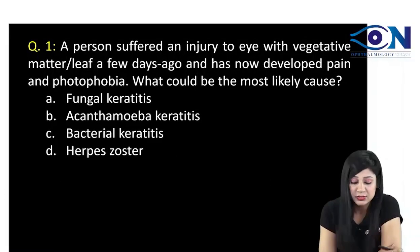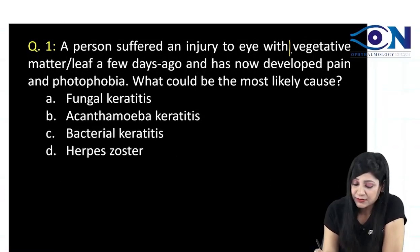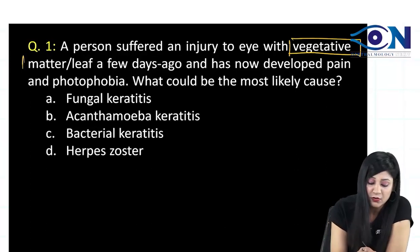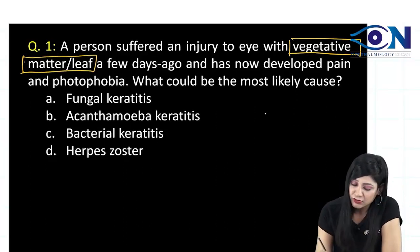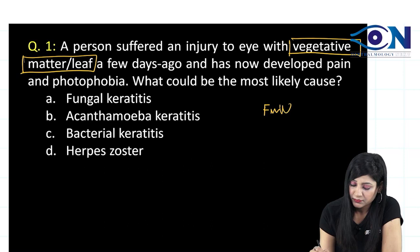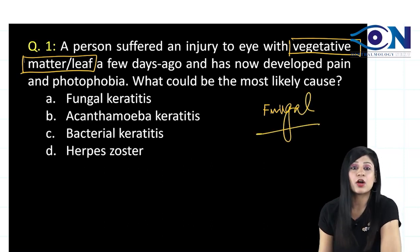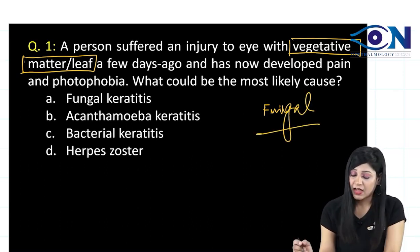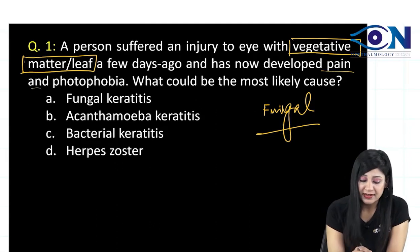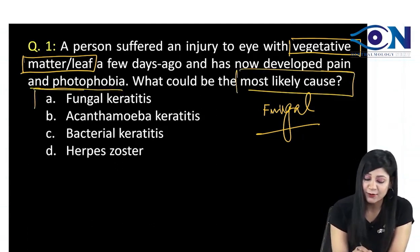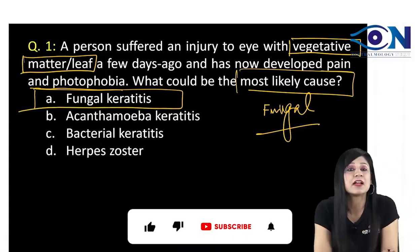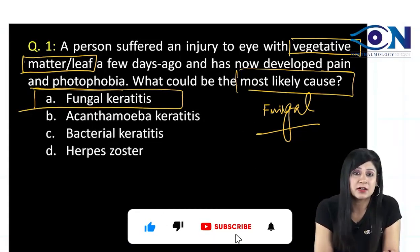A person is suffering from injury to the eye with vegetative matter. Whenever we have a history of trauma from vegetative matter, we think about fungal corneal ulcer. The patient is also having pain and photophobia, so the most likely cause is fungal keratitis or fungal corneal ulcer.